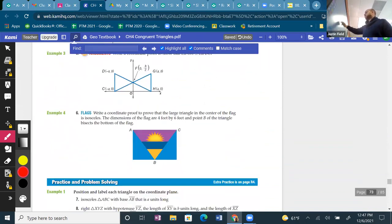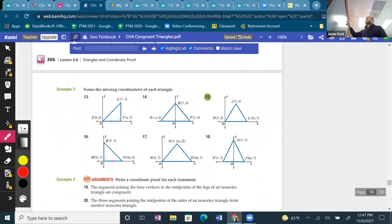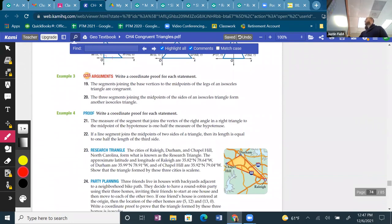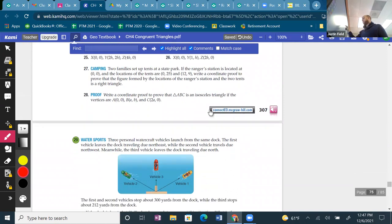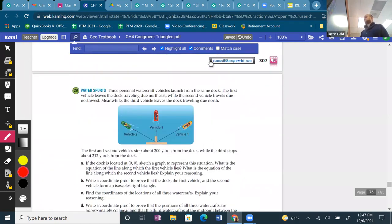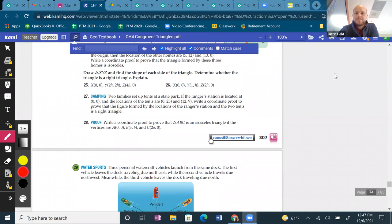So give these things a try. Try filling in the missing coordinates. Try writing a coordinate proof using the distance formula, the midpoint formula. Look at these word problems, not the hot problems. Make sure you know how to do all of them because we're going to have a return of the textbook questions on next week's quiz. I hope you're excited and I hope you're ready. Bye.